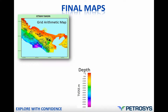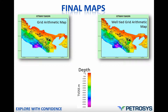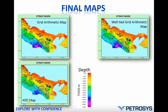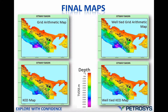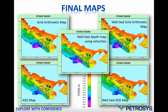Here are our final maps. First is the grid arithmetic map without any well tie. Second is the well-tied grid arithmetic map, using the formula to convert two-way time to depth and then well-tying to well locations. Third is the kriging with external drift map, and fourth is the well-tied KED map, which has very little variation. Finally, there is the depth map created using seismic velocities and well-tied to well locations. The well-tied grid arithmetic map matches quite well with the velocity-derived map.